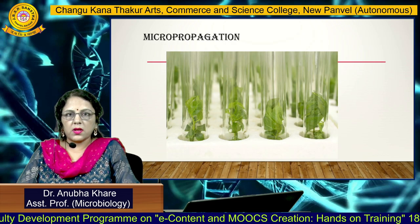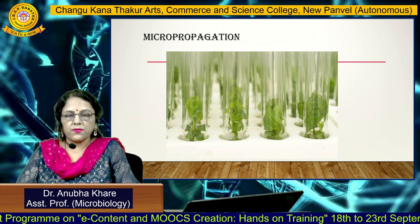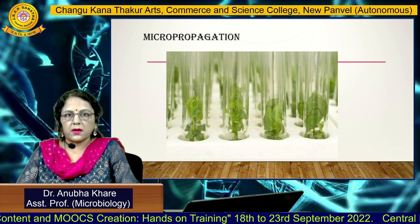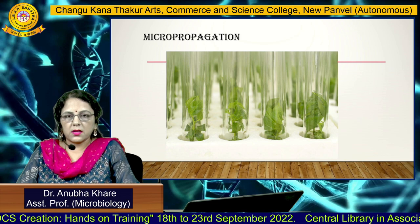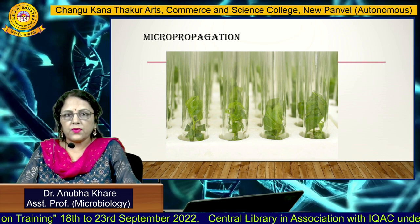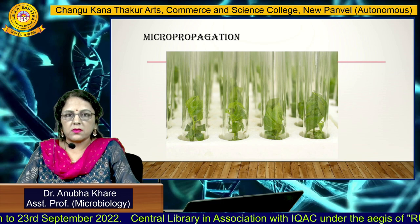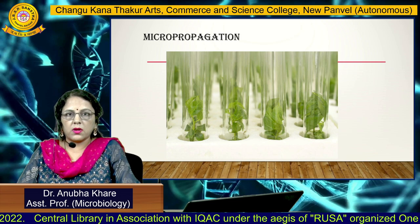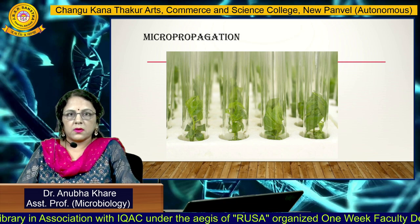The next technique is micropropagation, in which thousands of clones of a single plant can be produced by plant tissue culture methods — either by callous culturing, somatic embryogenesis, or micropropagation technique — producing the same type of plants. Hence it is also known as true-to-type propagation.